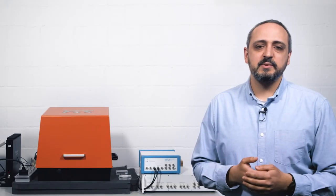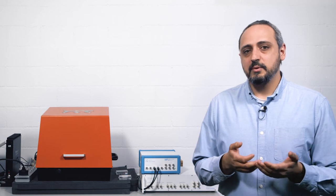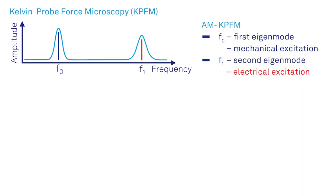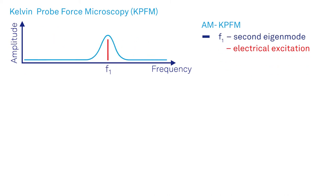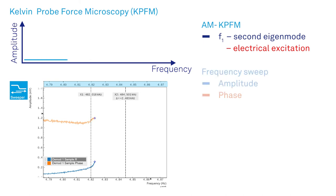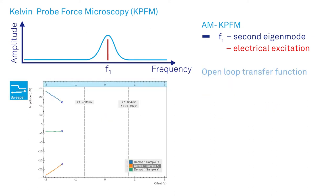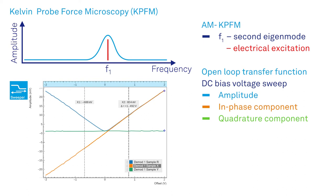Now we have several options to implement KPFM. The most straightforward approach is probably the amplitude modulated KPFM, where the electrical excitation is performed at the second eigenmode uncoupled from the mechanical excitation. We perform a frequency sweep to determine the center frequency and line width of this eigenmode. Then we characterize the open-loop transfer function by sweeping the DC bias voltage.